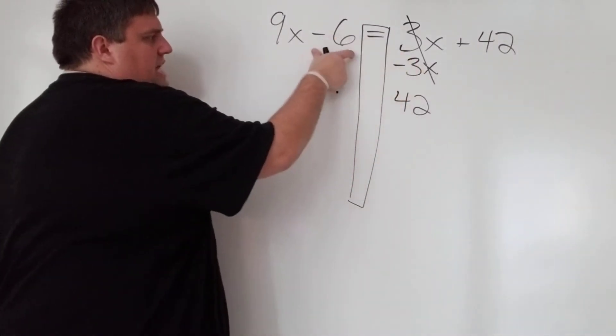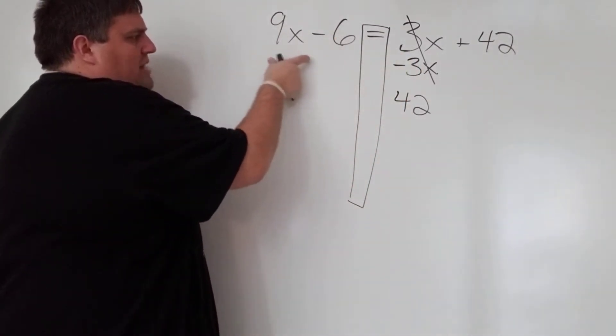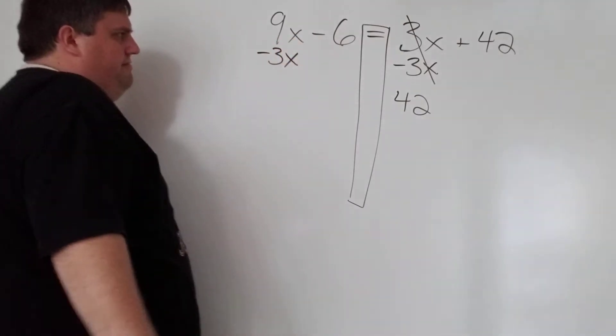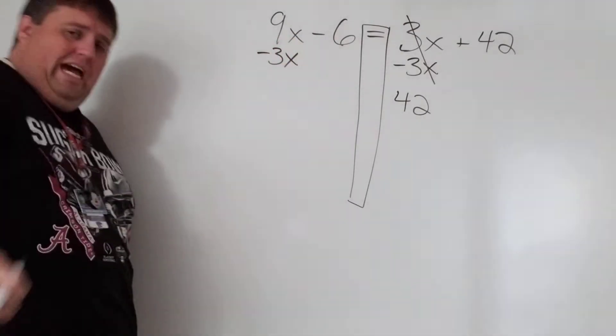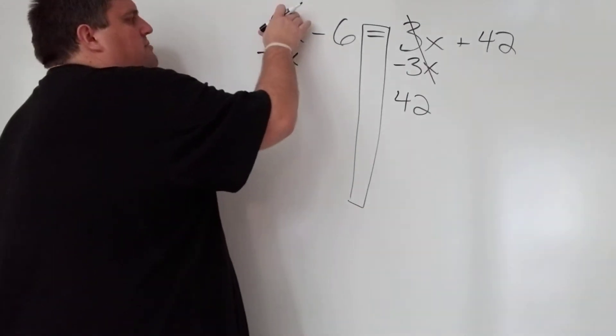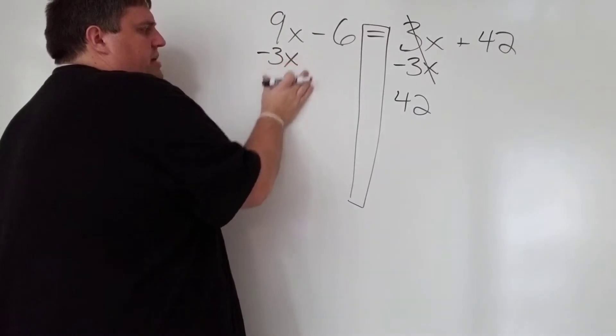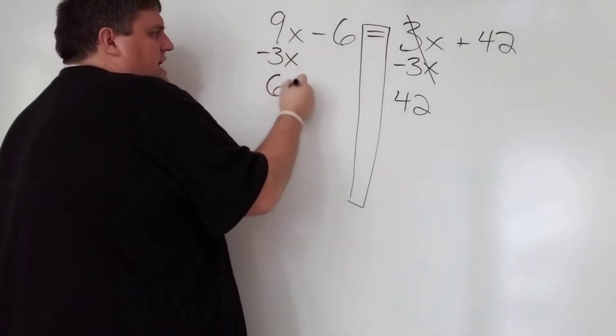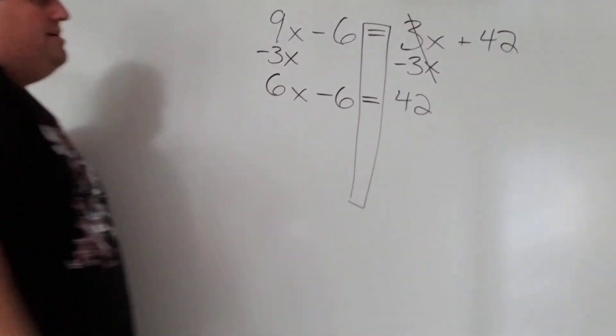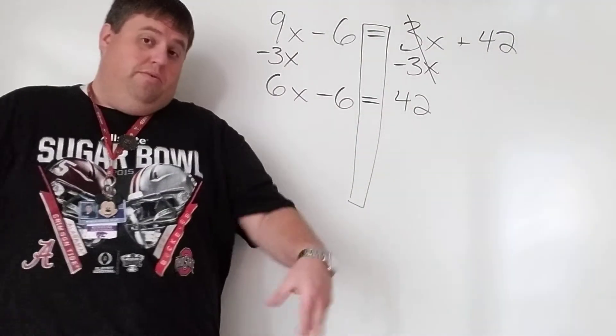But when I subtract 3x on this side, I have to make sure that I match it up with the thing that it's like terms with. So the 3x is going to match up with the 9x. And then I can go ahead and subtract 3x, or I'm sorry, 9x minus 3x is going to give me 6x like that. So recap.